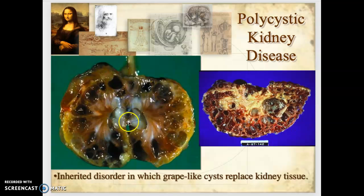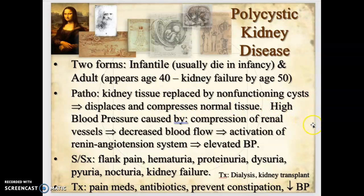Polycystic kidney disease is an inherited disorder where grape-like cysts replace normal kidney tissue. There are two forms: an infantile form, which is usually fatal at birth, and an adult form that is typically diagnosed around age 40, with full-blown renal failure developing by age 50. The cysts displace and compress normal tissue, activating the renin-angiotensin system and causing elevated blood pressure.